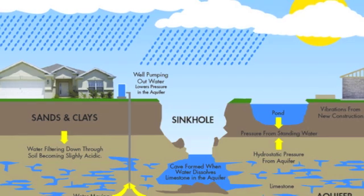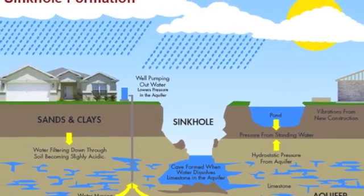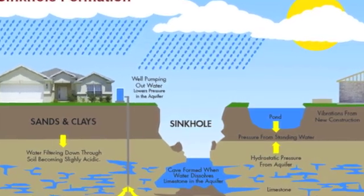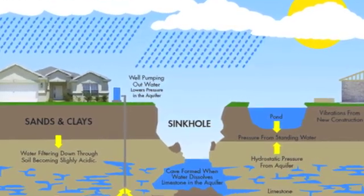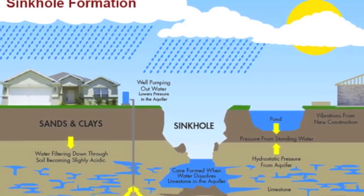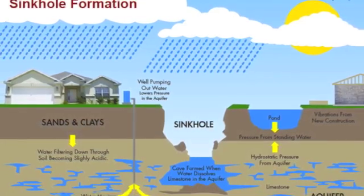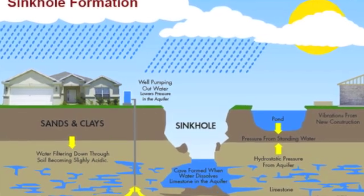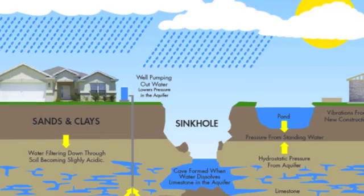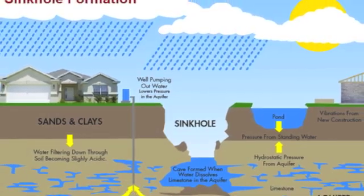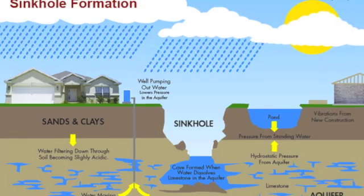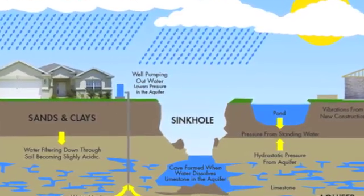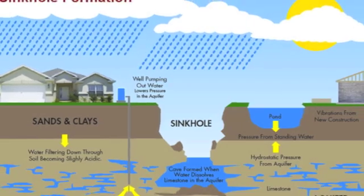So why do so many sinkholes occur in Florida? Homes in Florida are built atop layers of sand and clay, which sits atop the limestone platform. There are many underground cavities in this limestone platform, as well as tunnels, which fill up with fresh water, and this is known as the Florida aquifer system. Limestone dissolves quickly by carbonic acid, which is found in rainwater as well as decaying plant material.